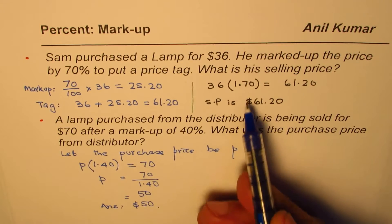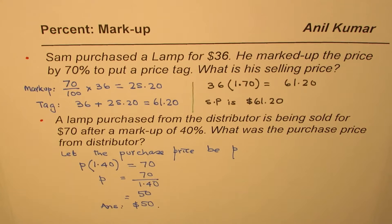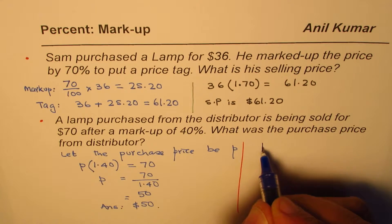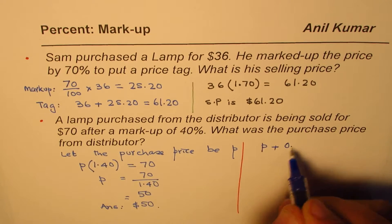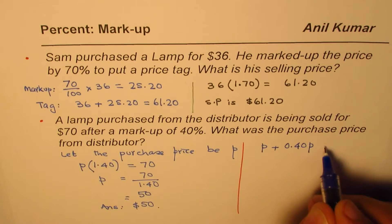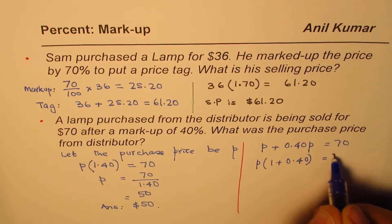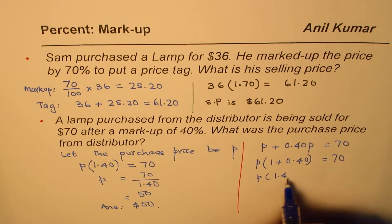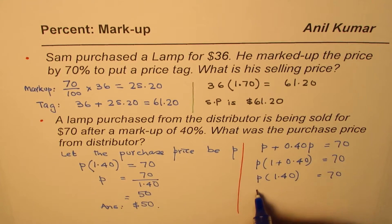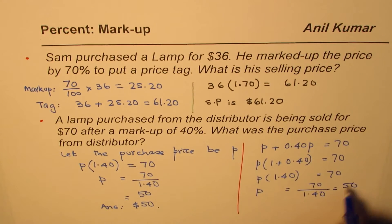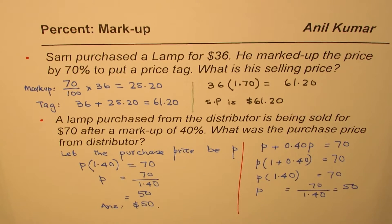This method is very useful and can be applied to get quick results. The original method that could also be used here is: let P be the purchase price, so P plus 40% of P, which is 0.40P, equals 70. Taking P common gives you P times (1 + 0.40) equals 70, which is P times 1.40. So P equals 70 divided by 1.40, which gives you $50. We land with the same equation.